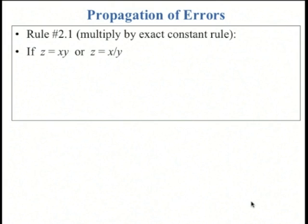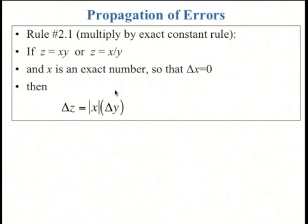Rule 2.1, the multiply by exact constant rule. If you've got z equals x times y, or z equals x divided by y, and x here is an exact number, so there's zero error in x, then it follows from before that delta z is just equal to x times delta y, or the absolute value of x times delta y.